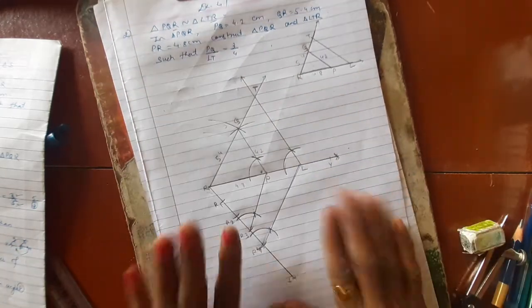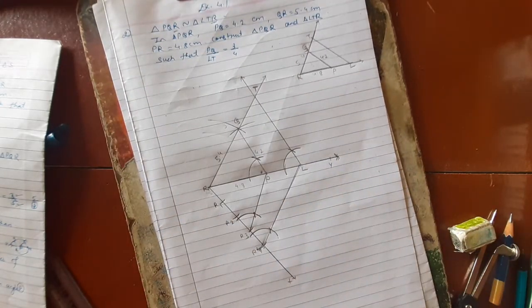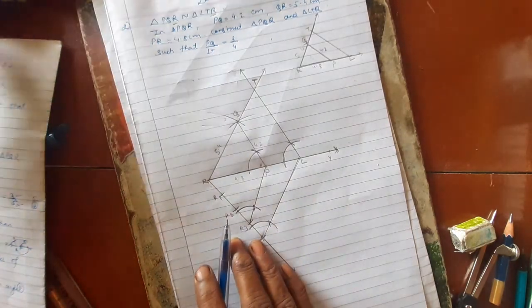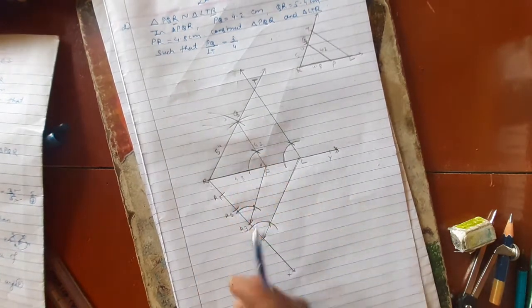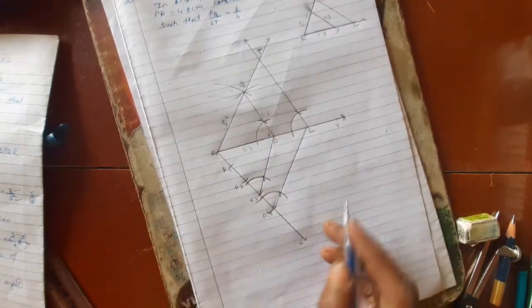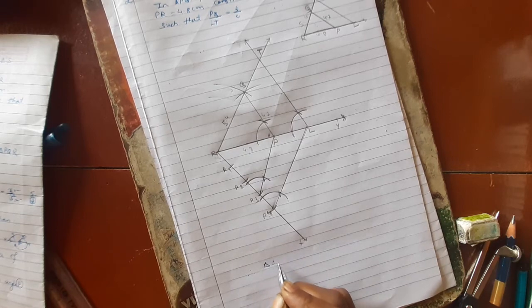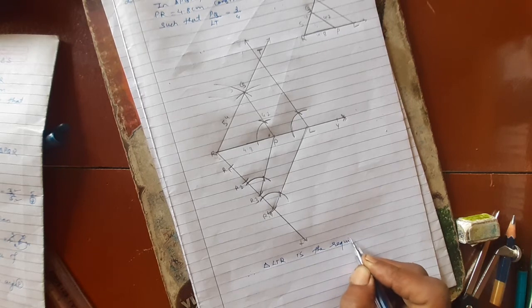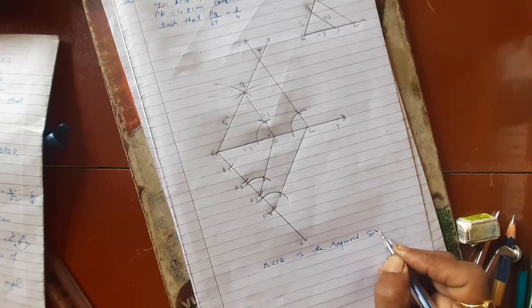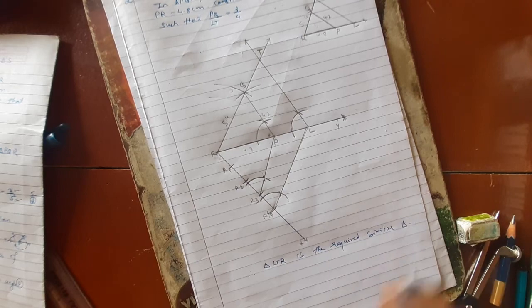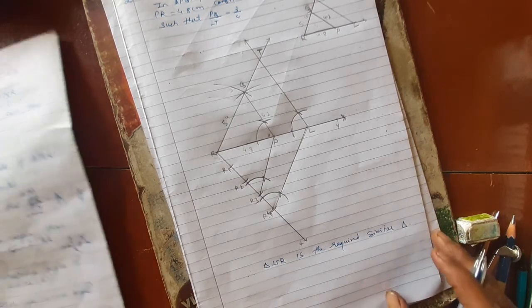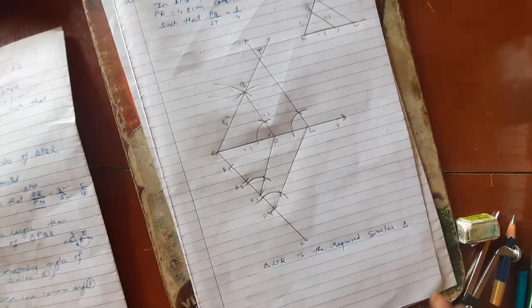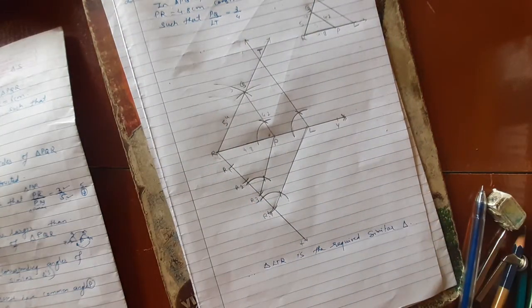So here we complete our construction of similar triangles. Triangle LTR is the required similar triangle constructed from the given triangle PQR. Here we complete exercise 4.1 and the construction of similar triangles. We will see the next one in the next lecture. Thank you.